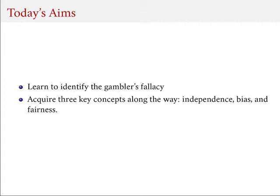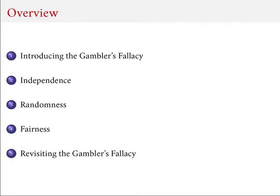A very interesting way of introducing these ideas is by considering something called the gambler's fallacy. So I will begin by introducing the gambler's fallacy, and then I will discuss and introduce the ideas of independence, randomness, and fairness. Then in the next video, we will revisit the gambler's fallacy in light of what we've learned from these three concepts.